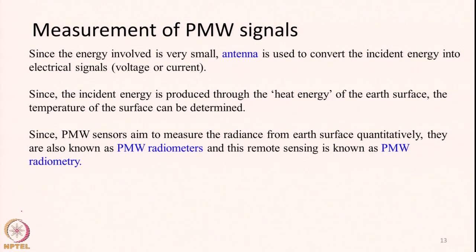How do we measure passive microwave signals? When we discussed optical remote sensing we got to know about whisk broom scanners, push broom sensors, and 2D array sensors — detectors that look at one area, collect energy, and store it as digital numbers. Similarly, in the microwave domain, the detector used for collecting information about the earth surface is an antenna. It is not a simple detector like in optical sensing; it is an antenna similar to those used for communications.